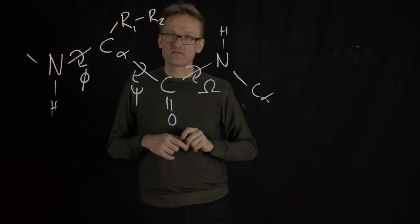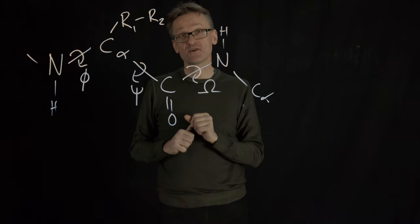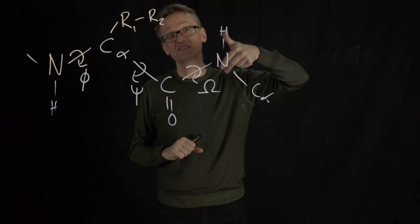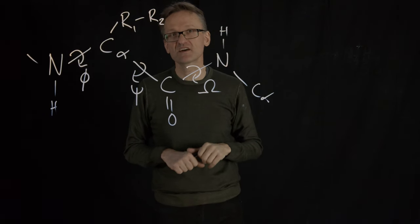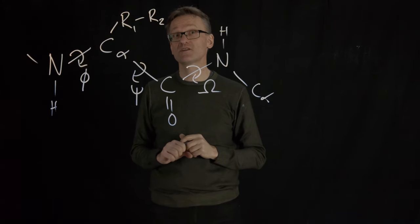It's planar, and in virtually all cases this is going to be a trans bond. But for a few amino acids, proline in particular, it can occasionally rotate around and be cis. It's going to be very rare that we look at the omega bond, but if you see the expression you'll know what it is.